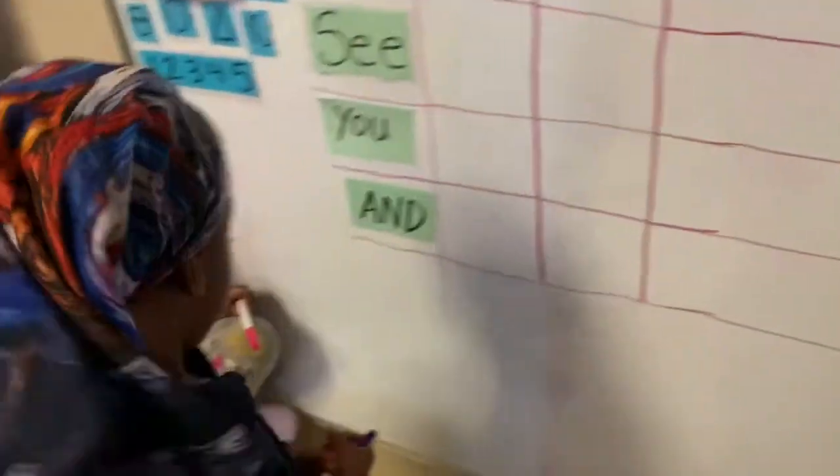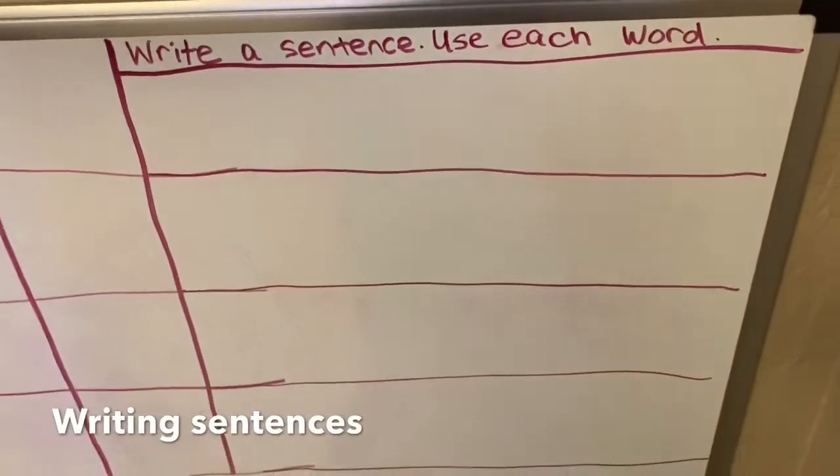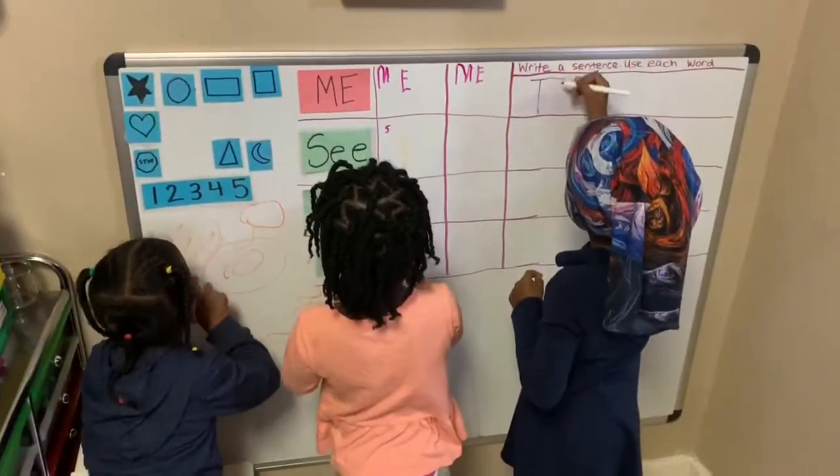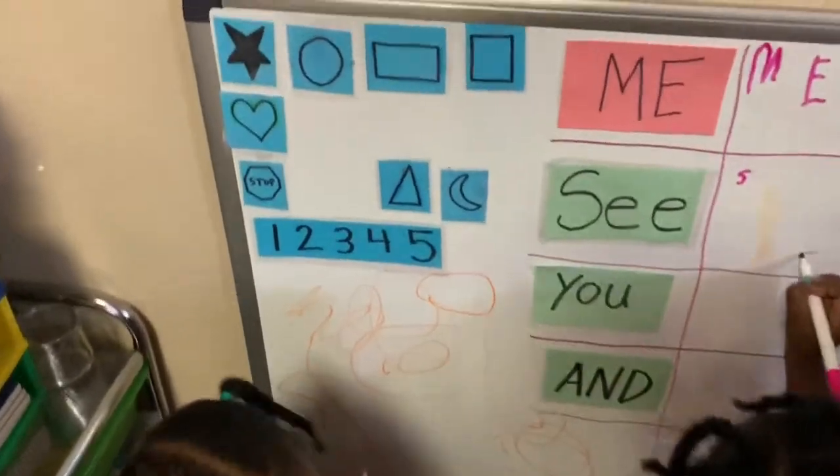Use each word. Use each word. So instead of this friend, Laibay, writing the word, she's actually going to write sentences. So we're doing well. So let's start over here. Demario, I see you're drawing these shapes.